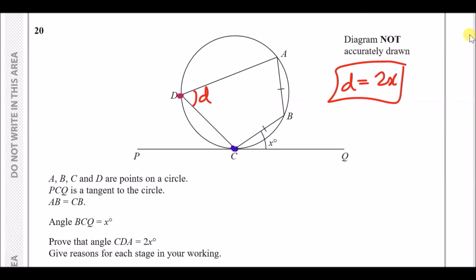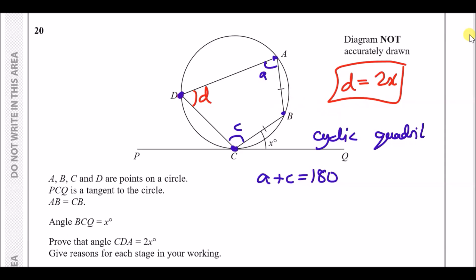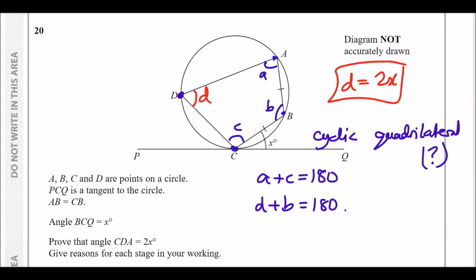When a four-sided shape is enclosed in a circle touching every point, it's called a cyclic quadrilateral. A key property is that opposite pairs of angles must add up to 180 degrees — so angles A and C sum to 180, and therefore angles D and B must also add up to 180.